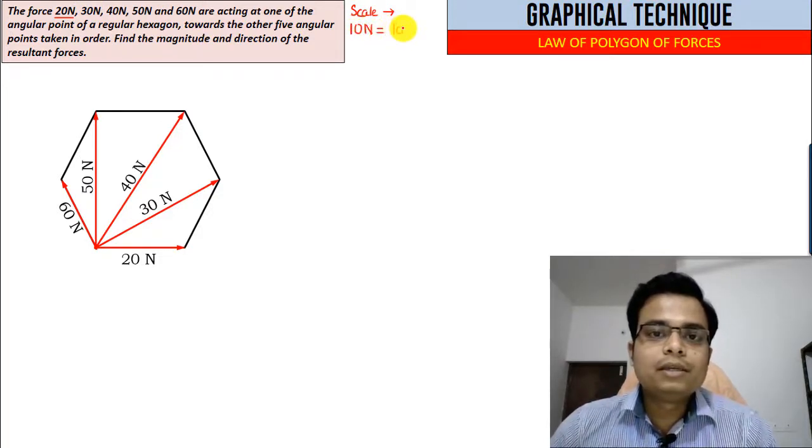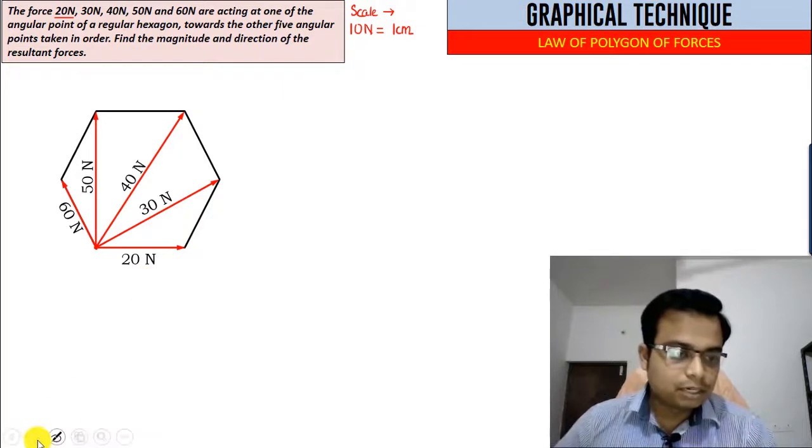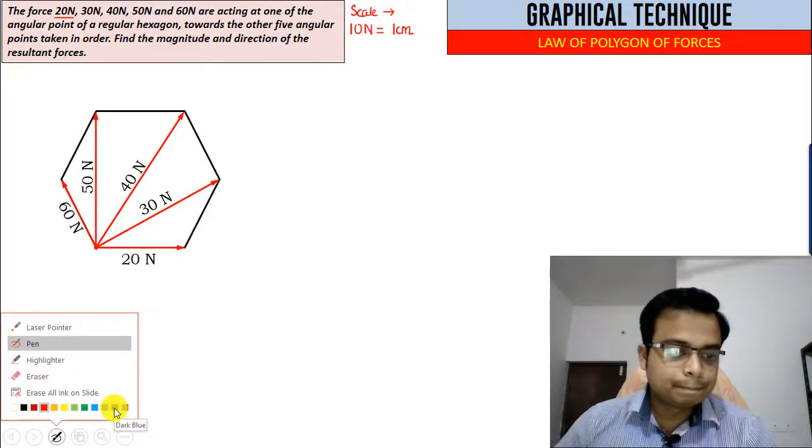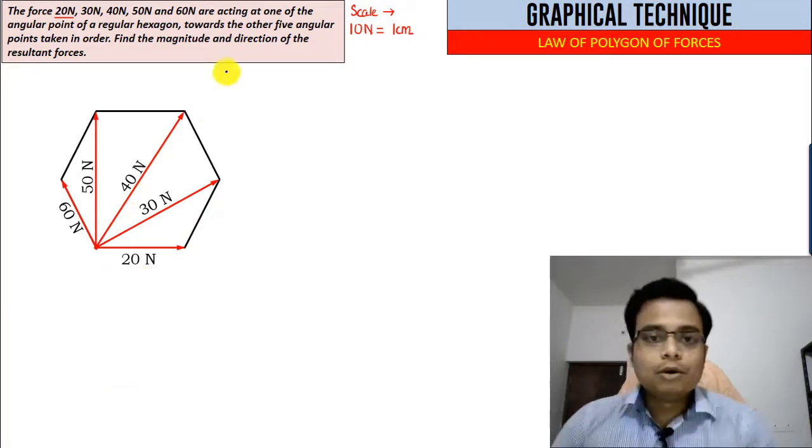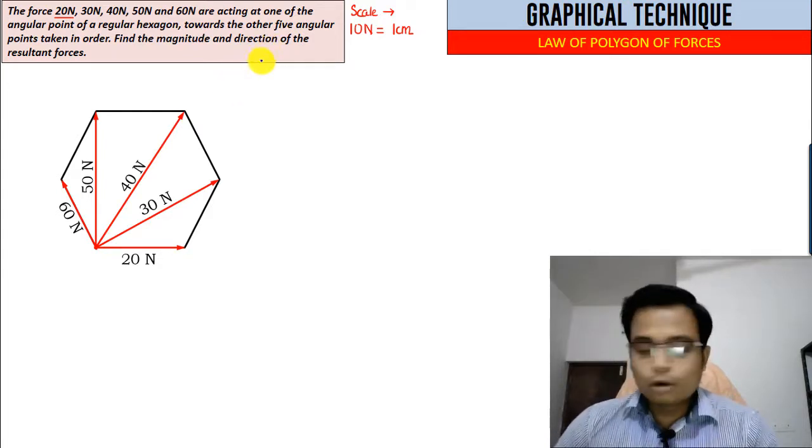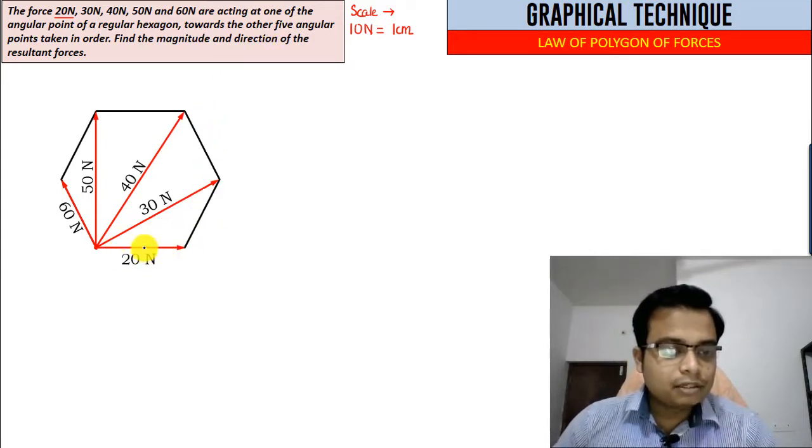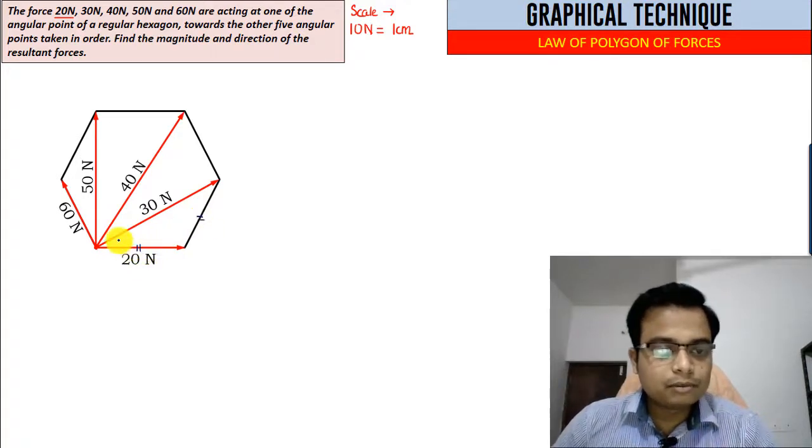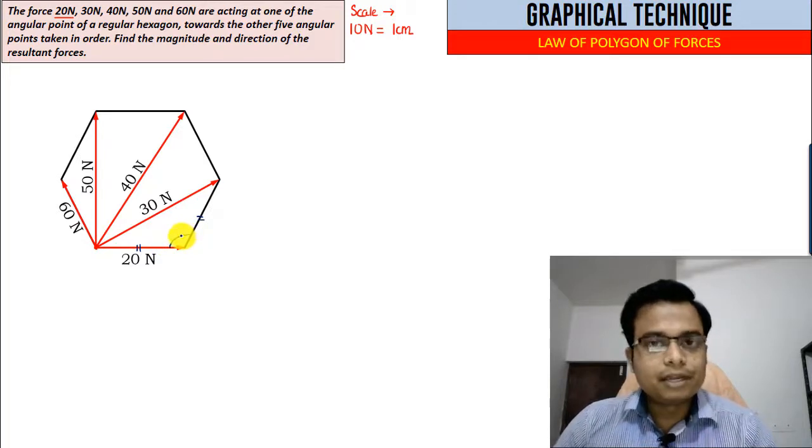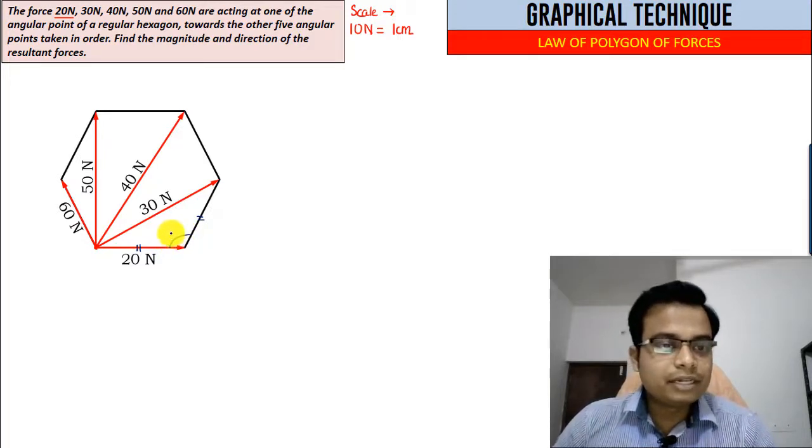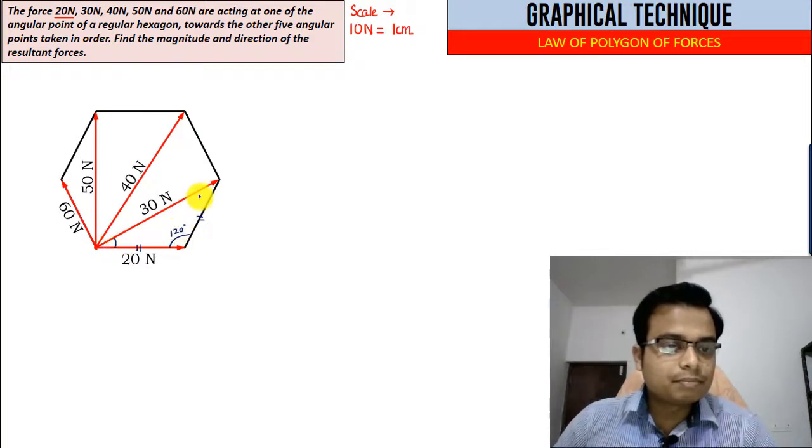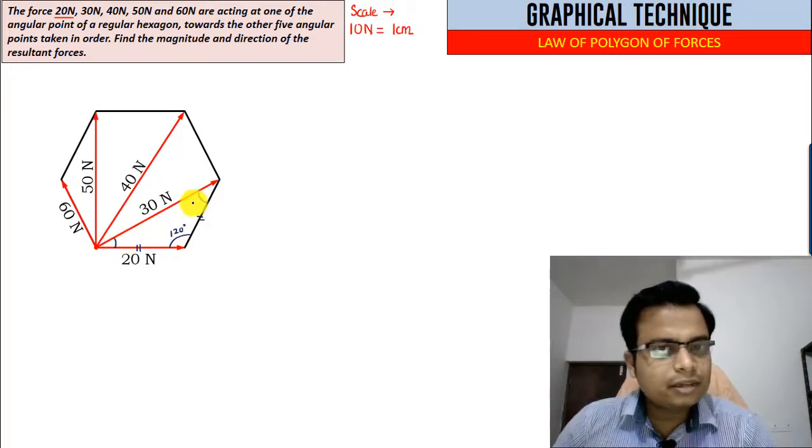Let me find out the angles. You can clearly see this side and this side, both of them are equal. This angle over here, since this is a regular hexagon, all the internal angles are 120 degrees each. This is going to be 120.